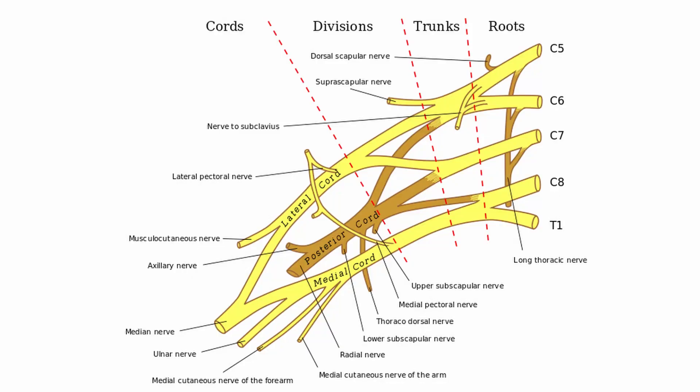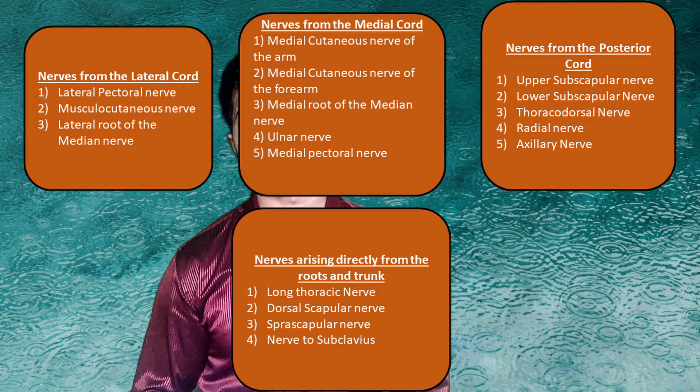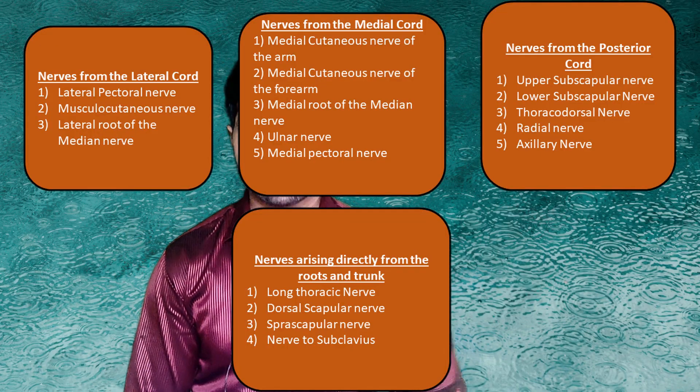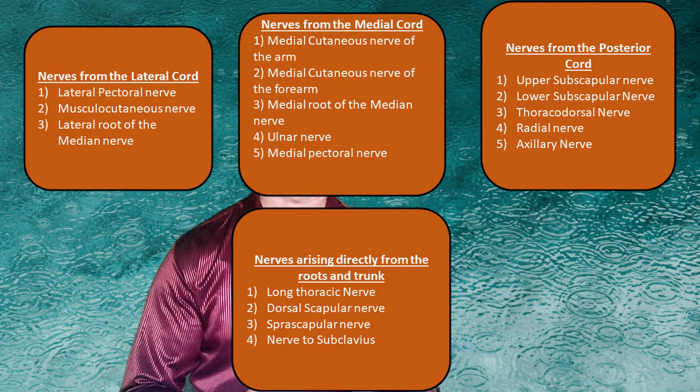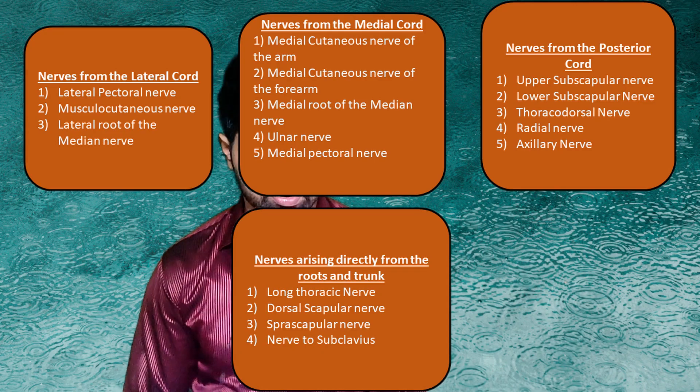Basically, we have three cords: lateral cord, medial cord and posterior cord. And these are the nerves arising from these cords. So basically, the nerves responsible for all the functions of the upper limb arise from the brachial plexus.